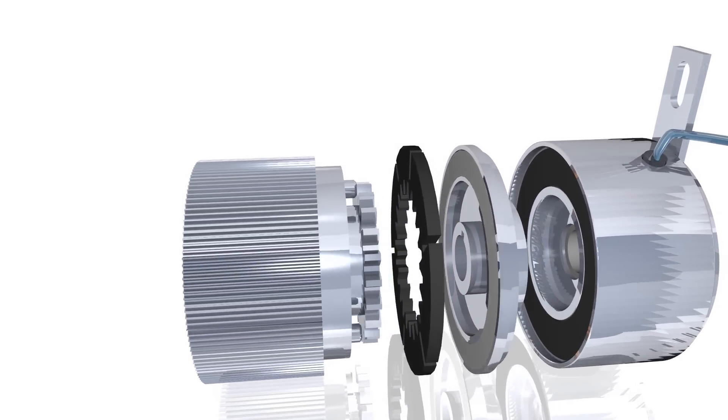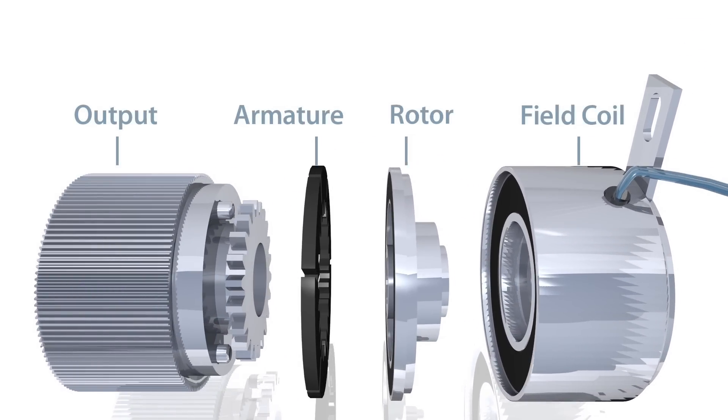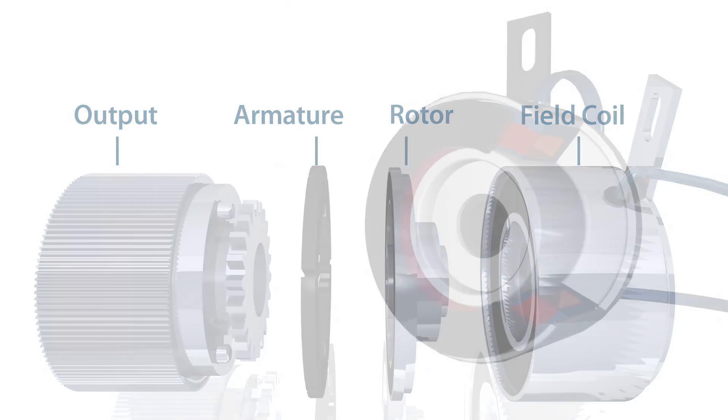The key components of the clutch are the output, which can be directly connected or have a pulley or timing belt like the example shown here, the armature, rotor, and field coil.